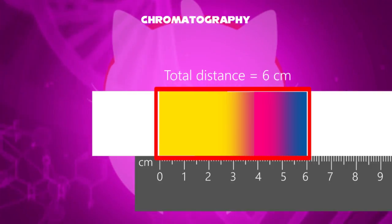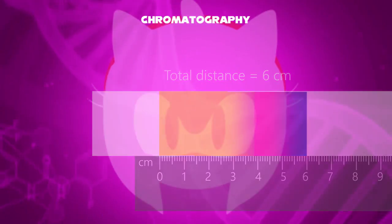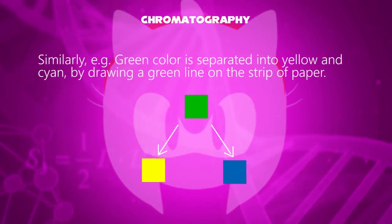We have to carefully measure where the separate colors traveled. The distance we now have obtained is six centimeters total distance. The maximum distance traveled is the cyan color. Similarly, you can try any color you'd like, such as a green line which separates into yellow and cyan.